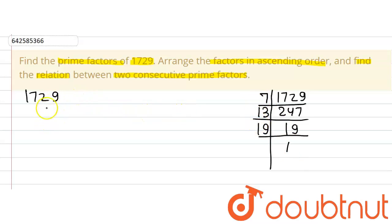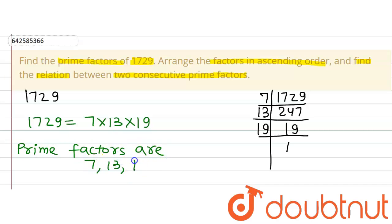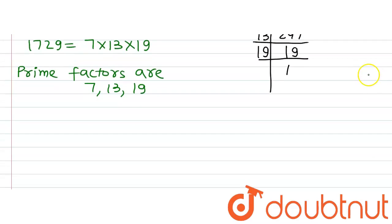So we can write 1729 as a product of its prime factors: 7 multiplied by 13 multiplied by 19. The prime factors are 7, 13 and 19. Now we are supposed to arrange them in ascending order. The least one comes first, which is 7, then 13, then 19. They are now arranged in ascending order.